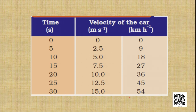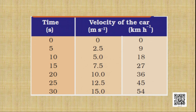After 5 seconds the velocity is 2.5 meters per second (9 km/h). At the 10th second the velocity is 5 meters per second; at the 15th second it is 7.5 meters per second; at the 20th second it is 10 meters per second; at the 25th second it is 12.5 meters per second; and at the 30th second it is 15 meters per second. In equal intervals of time the velocity is increasing uniformly — in each interval the velocity increases by 2.5 meters per second.